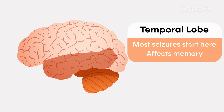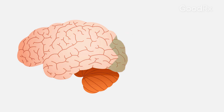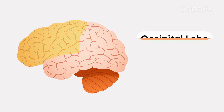If seizures start in those areas, memory can be affected. Occasionally seizures can come from the back of the head, called the occipital regions. People can hallucinate and they can also have a problem with thinking clearly.